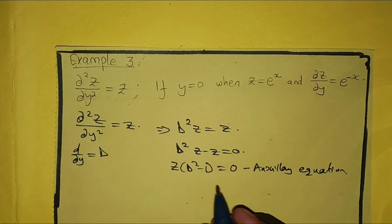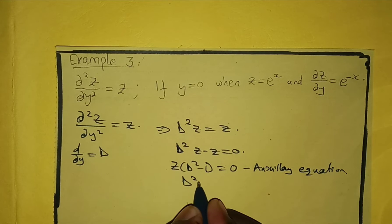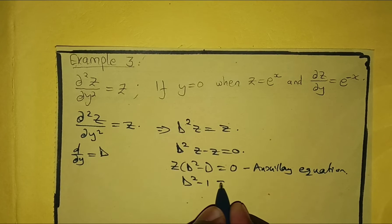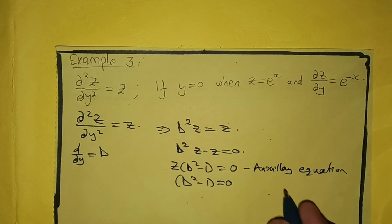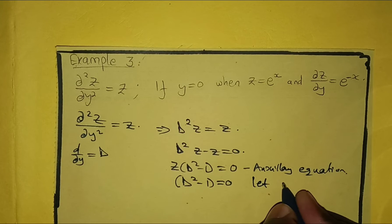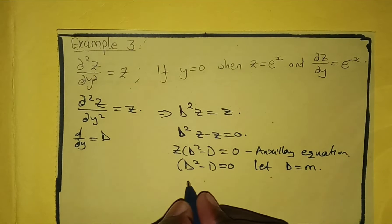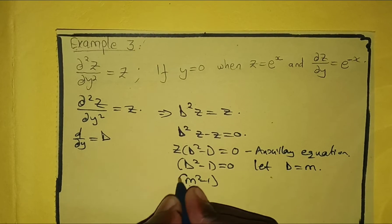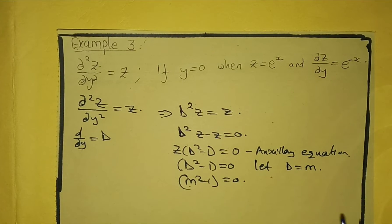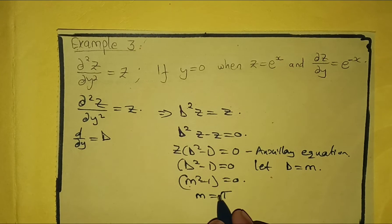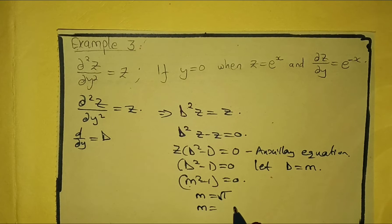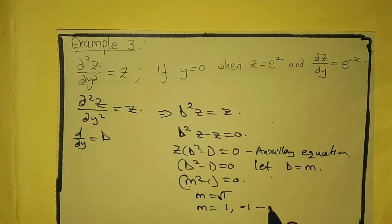So z = 0 and D² − 1 = 0. We let D equal m, so m² − 1 = 0. Solving, m equals the square root of one, which means m = 1 or m = −1. These are our two roots.